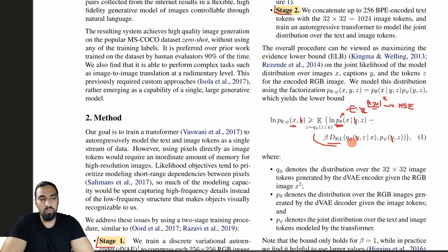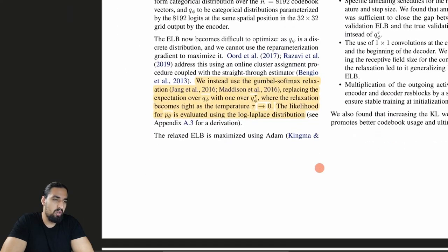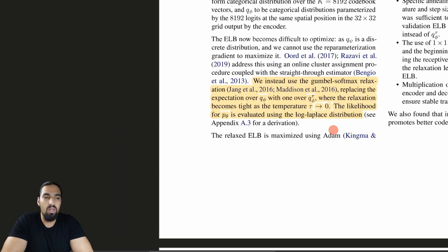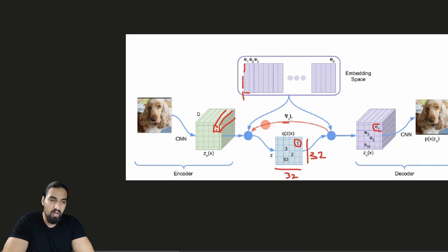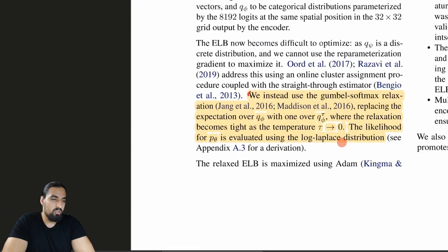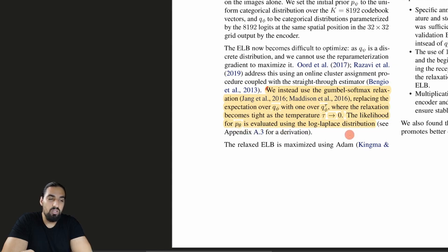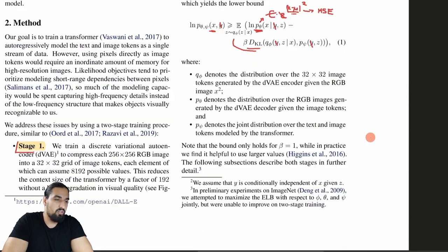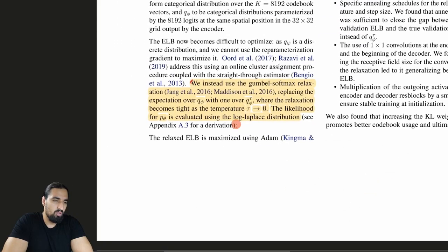A couple of details where DALL-E differs from VQVAE and VQGAN: they replaced the straight-through gradient estimator with a Gumbel Softmax relaxation. Also, the likelihood for p-sub-theta is evaluated using the log Laplace distribution rather than Gaussian. Gaussian leads to MSE as the objective, while using log Laplace gives a different objective. L1 and L2 reconstruction objectives correspond to Laplace and Gaussian distributions respectively — so L2 is basically MSE.